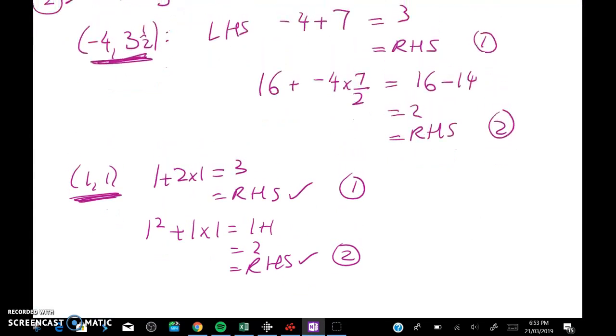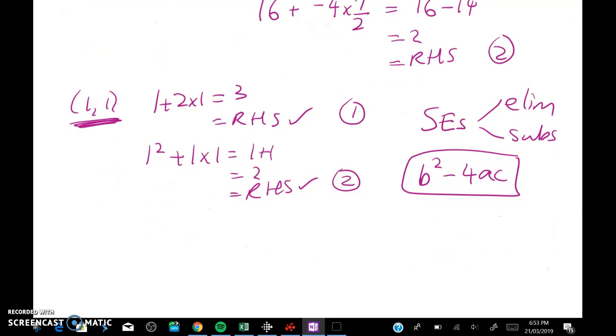So there was quite a lot in this one. Things that you need to be really confident with are simultaneous equations. We've got two methods on those. Elimination or substitution. What else? Quadratics b squared minus 4ac, the discriminant is really important for solving problems about quadratics. And the last thing that we had in this video was the technique of completing the square. So I hope that helped. Please leave me comments if there's anything in here that didn't make sense or if you want to know where to go to do extra practice on it. Thank you.